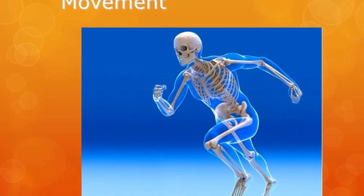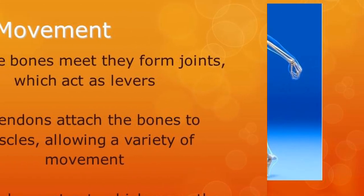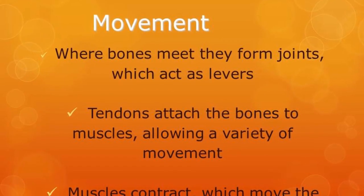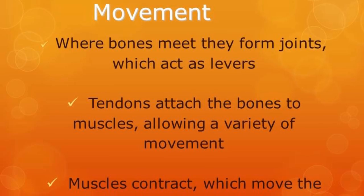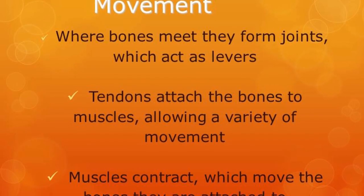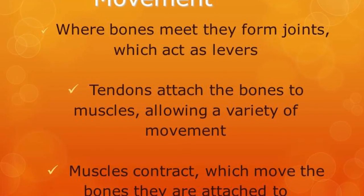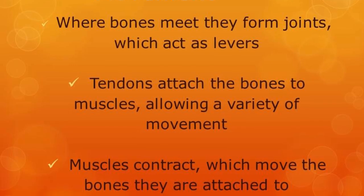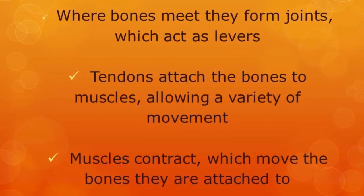What is movement? Bones meet and form joints, which act as levers. Tendons, which attach the bones to the muscles, allow a variety of movement depending on which joint is crossed. Your muscles then contract, which moves the bones that they are attached to.